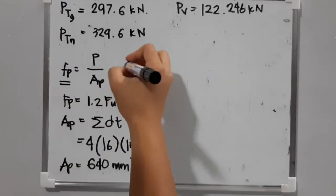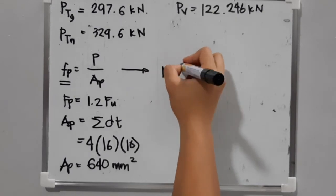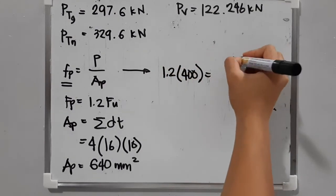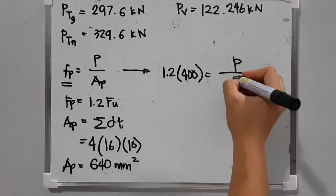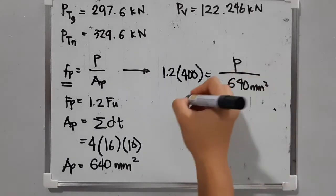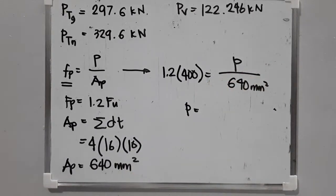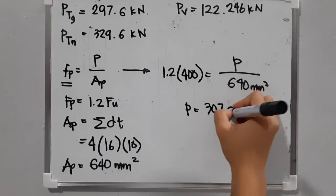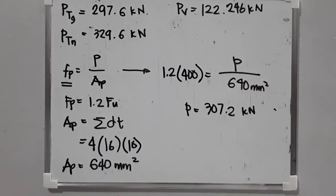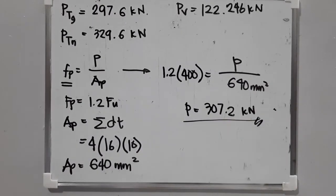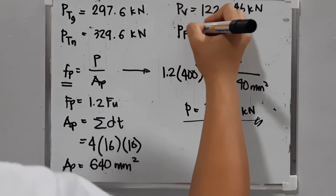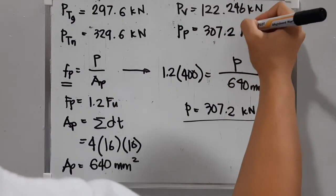Solving for force P: 1.2 times Fu of 400 equals P over the bearing area of 640 square millimeters. Therefore the value of P equals 307.2 kN. Be careful to express P in kilonewtons — the calculator may show 307,000, which is in newtons.